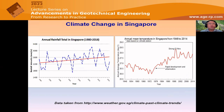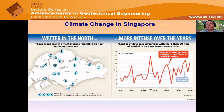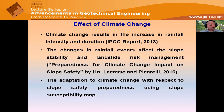We are looking at climate change trends, which are very clear here in Singapore. The annual rainfall increases and the annual mean temperature increases over the years. The number of days with intense rainfall also increases over the years. The climate change results in increase in rainfall intensity and duration, and changes in rainfall events affect slope stability and landslide risk management.